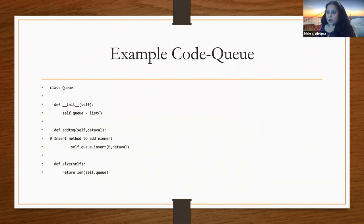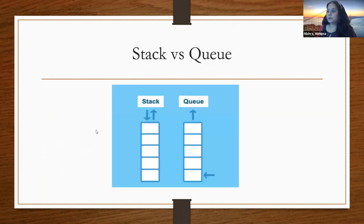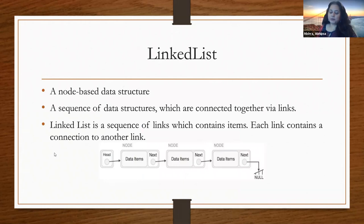Here's sample code for a queue with insert operations to add items and a length operation. If you add three items — Monday, Tuesday, and Wednesday — and print the size of the queue, it prints 3. This picture essentially just shows the difference between a stack and a queue: a stack is a LIFO data structure and a queue is a FIFO data structure.